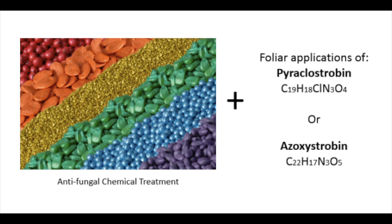Using clean seed is the most crucial step in prevention, but if that is not possible, then management with seed treatments coupled with multiple foliar applications of fungicides such as pyraclostrobin or azoxystrobin as the crop begins to bloom can be effective to reduce losses.